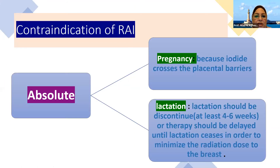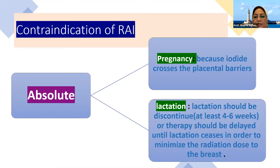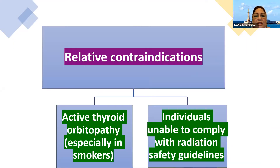The contraindications include absolute ones: pregnancy, because iodide crosses the placental barrier, and lactation. In the case of lactation, it should be discontinued at least four to six weeks prior, or therapy should be delayed until lactation ceases, in order to minimize the radiation dose to the breast. The relative contraindications include active thyroid orbitopathy, especially in smokers, and individuals unable to comply with radiation safety guidelines.